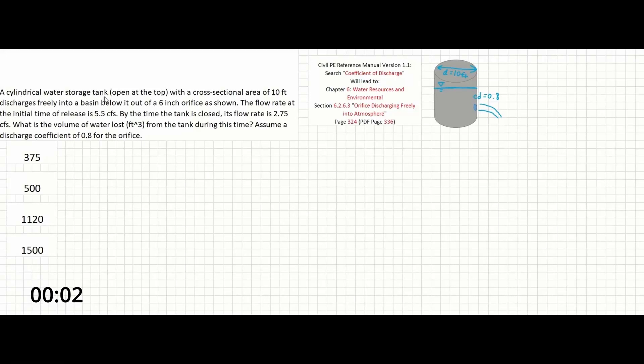A cylindrical water storage tank open at the top with a cross-sectional area of 10 feet discharges freely into a basin below it out of a 6-inch orifice as shown. The flow rate at the initial time of release is 5.5 cubic feet per second. By the time the tank is closed, its flow rate is 2.75 cubic feet per second. What is the volume of water lost in cubic feet from the tank during this time? Assume a discharge coefficient of 0.8 for the orifice.